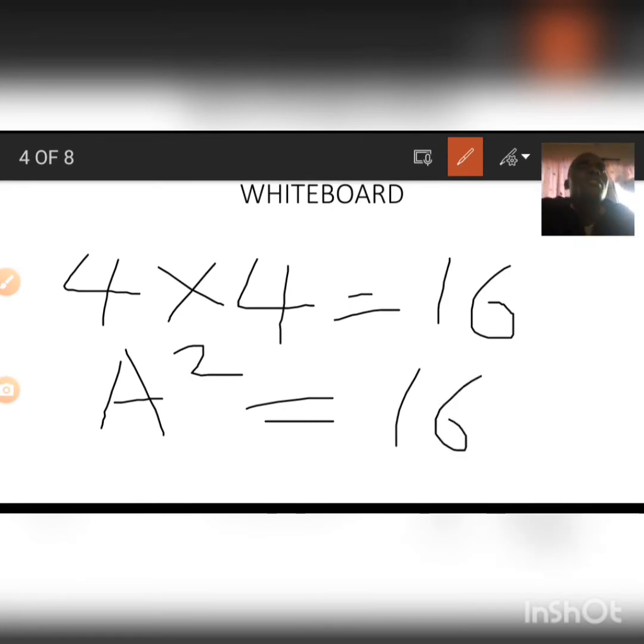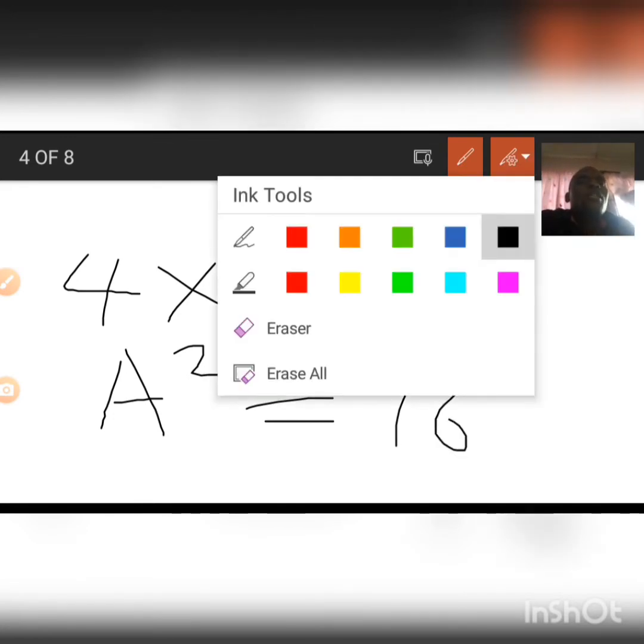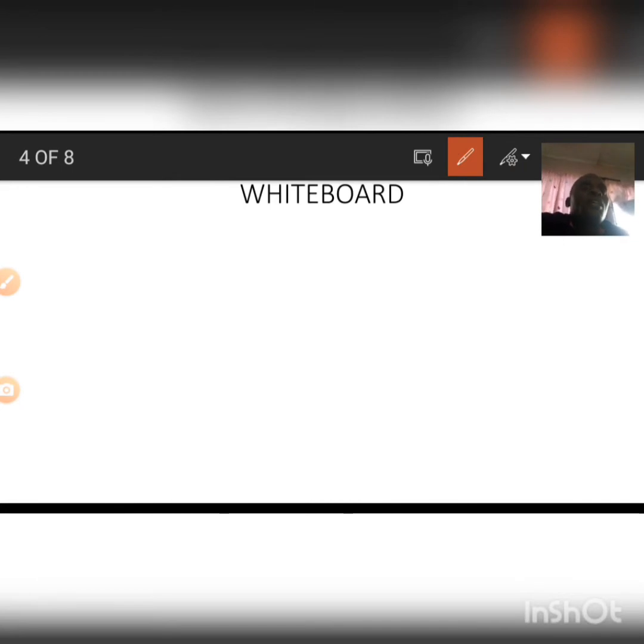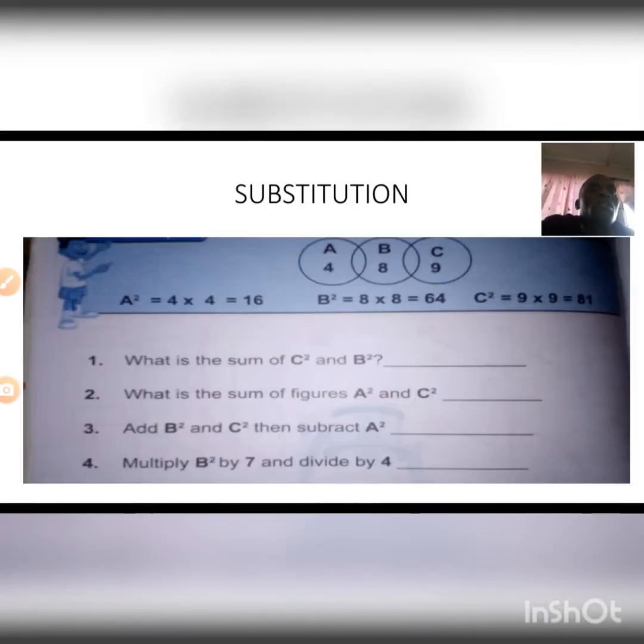So it means A squared is equal to 16. Now let's go back and see more on this. We also have B squared, in a similar way, is 8 times 8, and that gives us 64. Then we have C squared is 9 times 9, that is 81.